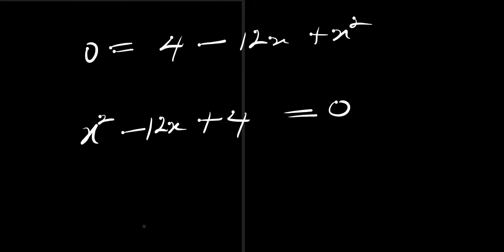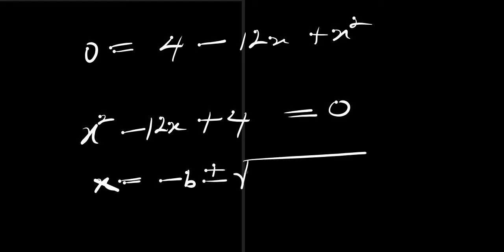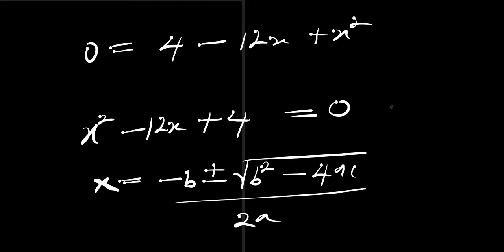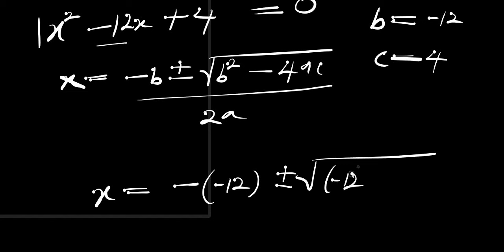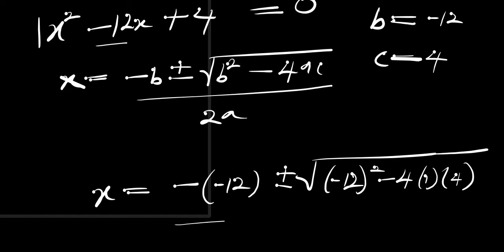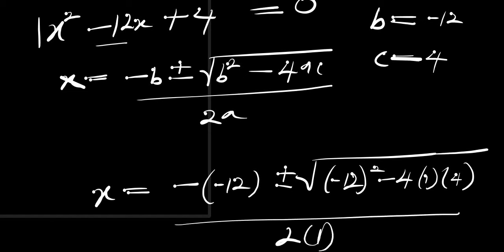We can solve this quadratic equation using the formula method: x equals negative b plus or minus the square root of b² minus 4ac, all divided by 2a. From our equation, a equals 1 (the coefficient of x²), b equals negative 12 (the coefficient of x), and c equals 4.